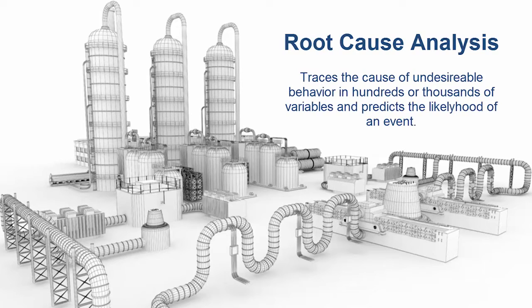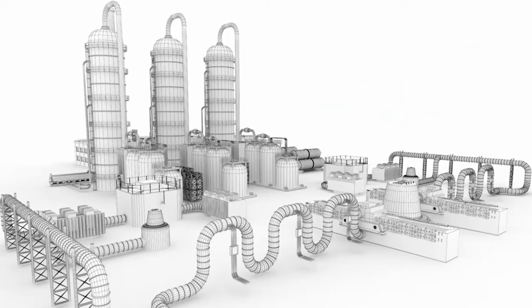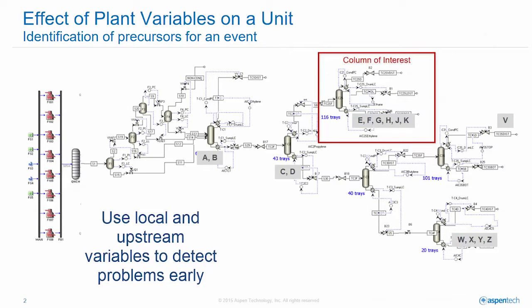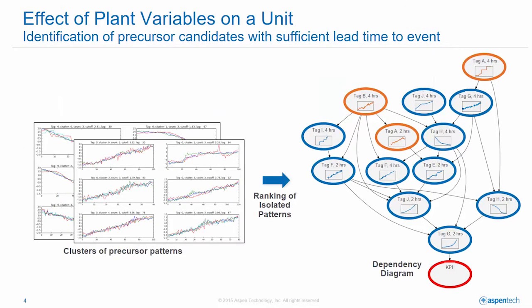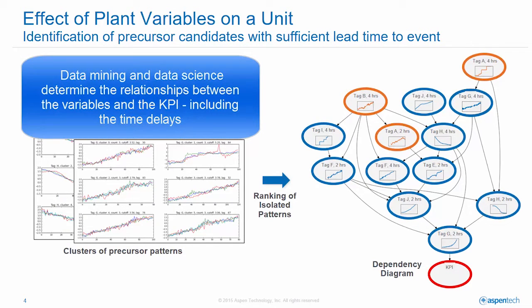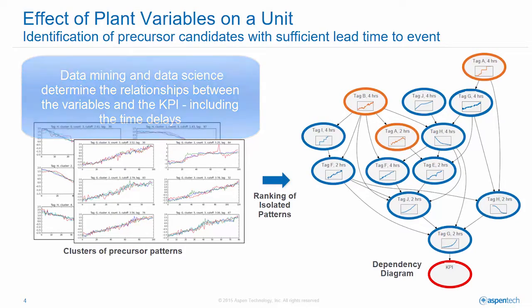Root cause analysis is one approach to this challenge. In RCA, we're using the variables for the unit under consideration, but we're also using upstream variables. That concept increases the forecast horizon and provides an even earlier prediction horizon. We'll use all of these variables and try to identify those that have the most direct impact on a key given performance indicator.